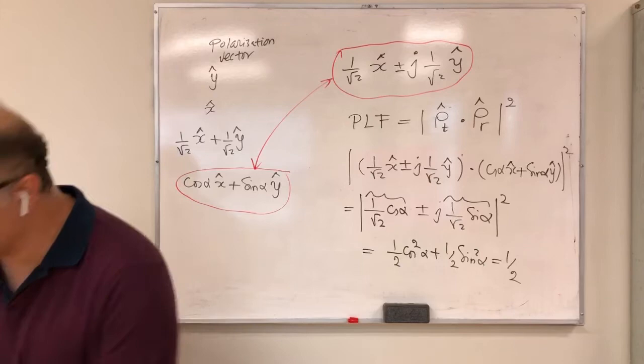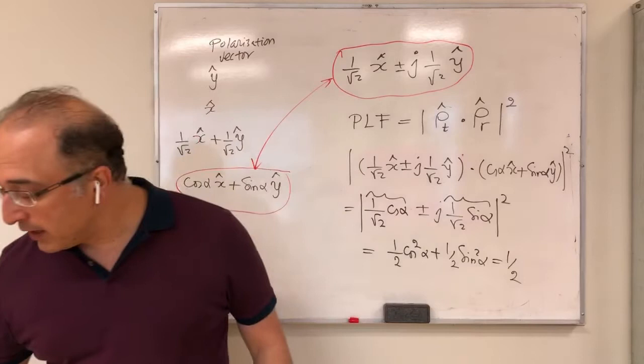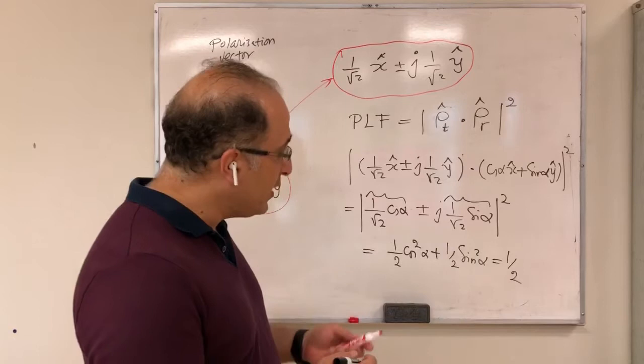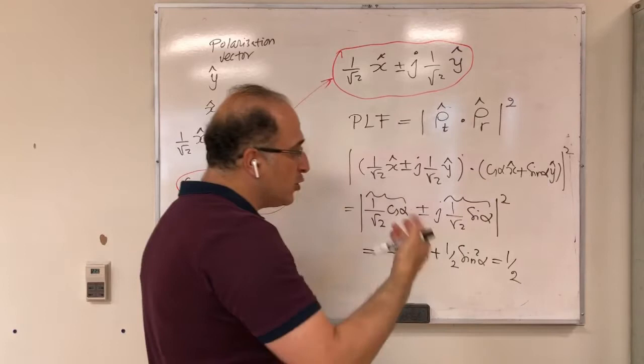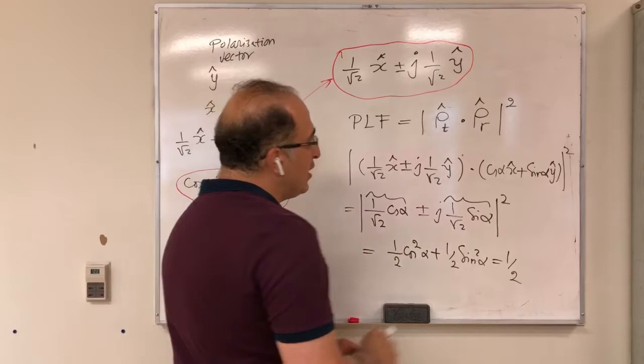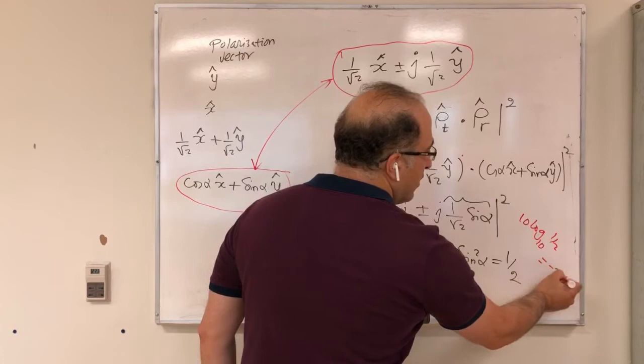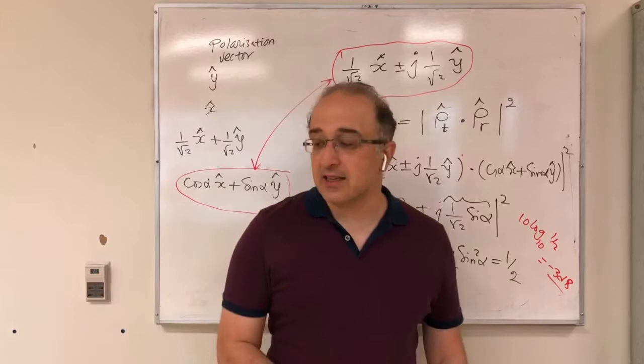In situations where the antenna orientation might change, it's a good design to have one circularly polarized and one linearly polarized — for example, GPS antennas use this. You may also want to express PLF in dB. Since PLF is a power quantity, you take 10·log₁₀(1/2), which equals minus 3 dB. So your polarization loss factor in this case is −3 dB.